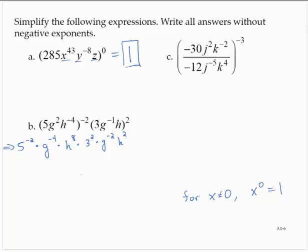Let's rearrange and regroup some stuff here. So I've got that 5 to the negative 2nd. Well, that's the same as 1 over 5 to the 2nd. And then I've got the 3 to the 2nd here. And then I would have g to the negative 4th, g to the negative 2nd. I would have h to the 8th, h to the 2nd.